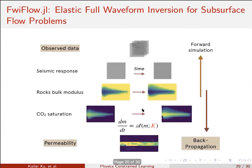The first application is elastic full waveform inversion for subsurface flow problems. This is a coupling of two equations: the wave equation, which goes from the rock bulk modulus to the seismic data, and the fluid dynamics equation, which governs the evolution of CO2 saturation in the subsurface. These two physical systems are coupled through the rock bulk modulus — the CO2 sequestration process changes subsurface properties, which affects the bulk modulus, which in turn affects wave propagation.